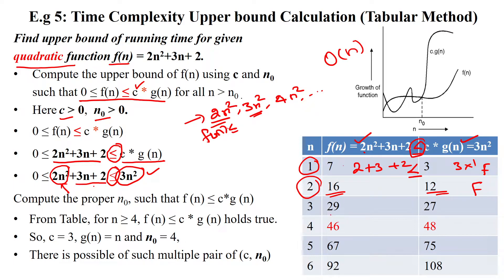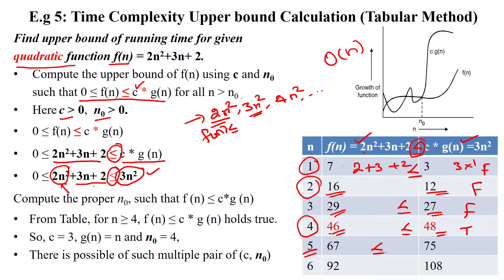When substituting n=2: f(2) = 16 and c·g(2) = 12 — this is also false. When substituting n=3: 29 ≤ 27 — also false. When substituting n=4: 46 ≤ 48 — yes, this is true! Checking n=5: 67 ≤ 75 — also true.